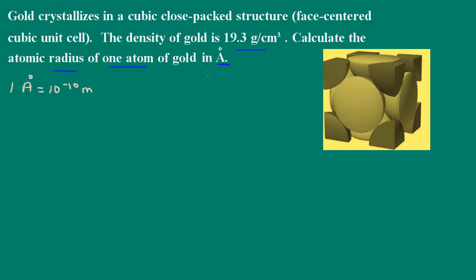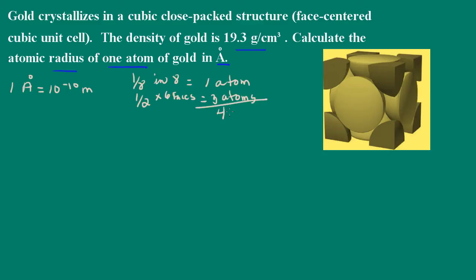How do we find the radius? Here I have a figure of a face-centered cubic unit cell. From this we know that we have one-eighth of an atom at each of the eight corners, so that's a total of one atom. Each face contains one-half of an atom and there are six faces, so that's three atoms in the faces. That gives us a total of four gold atoms per unit cell.